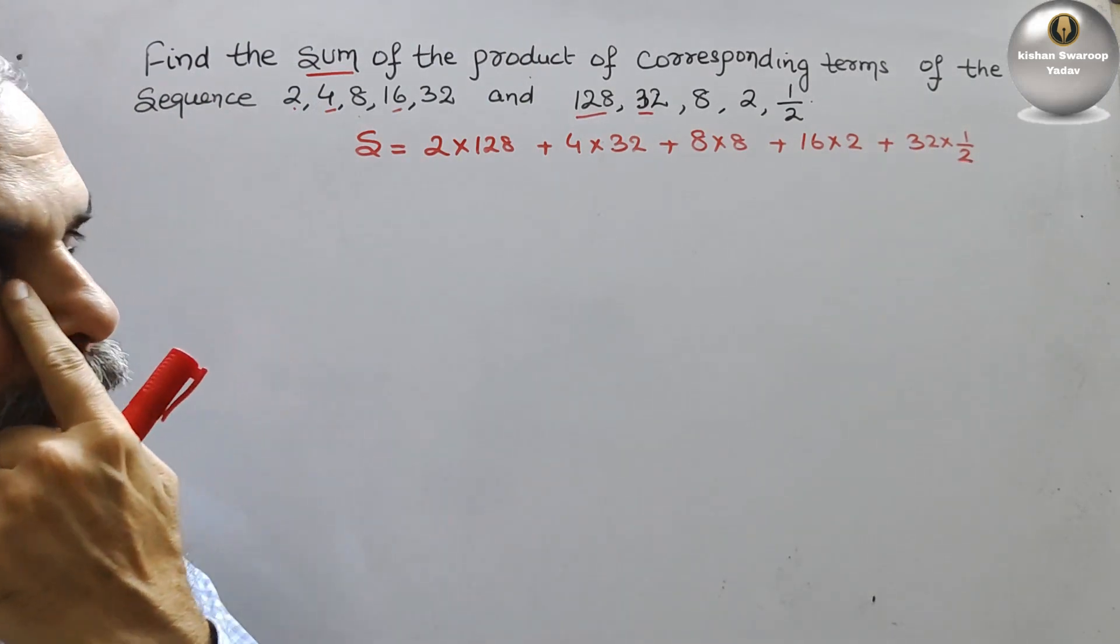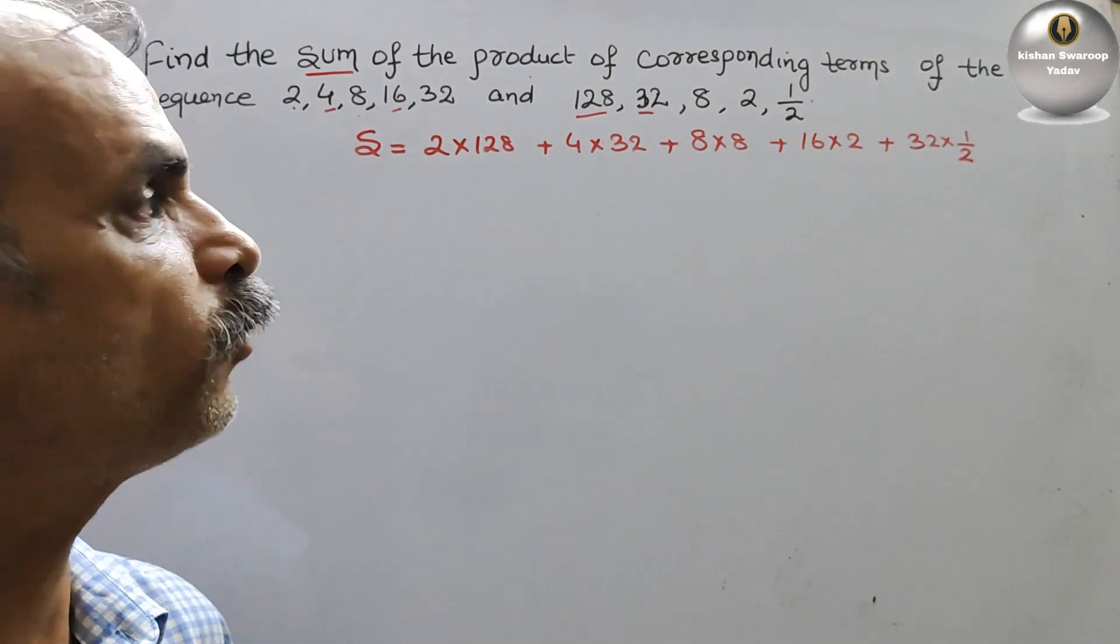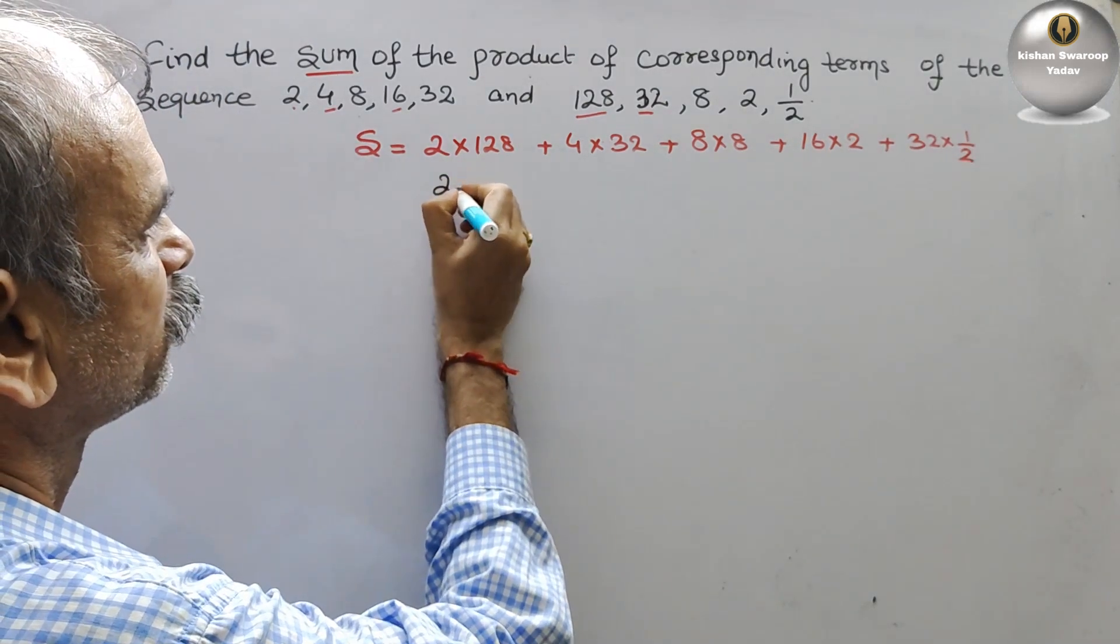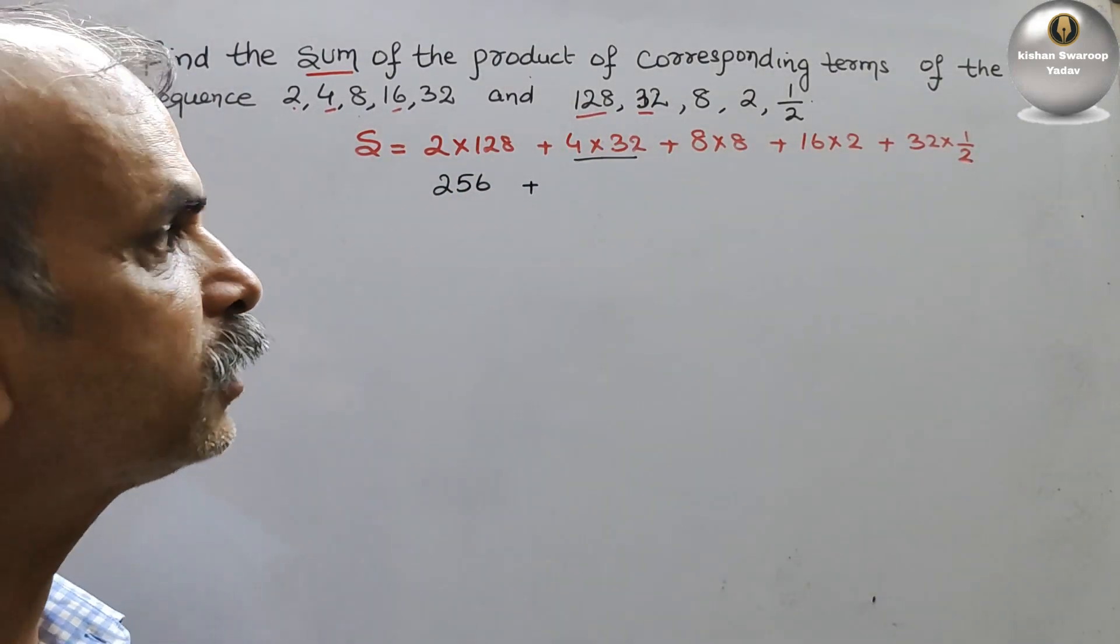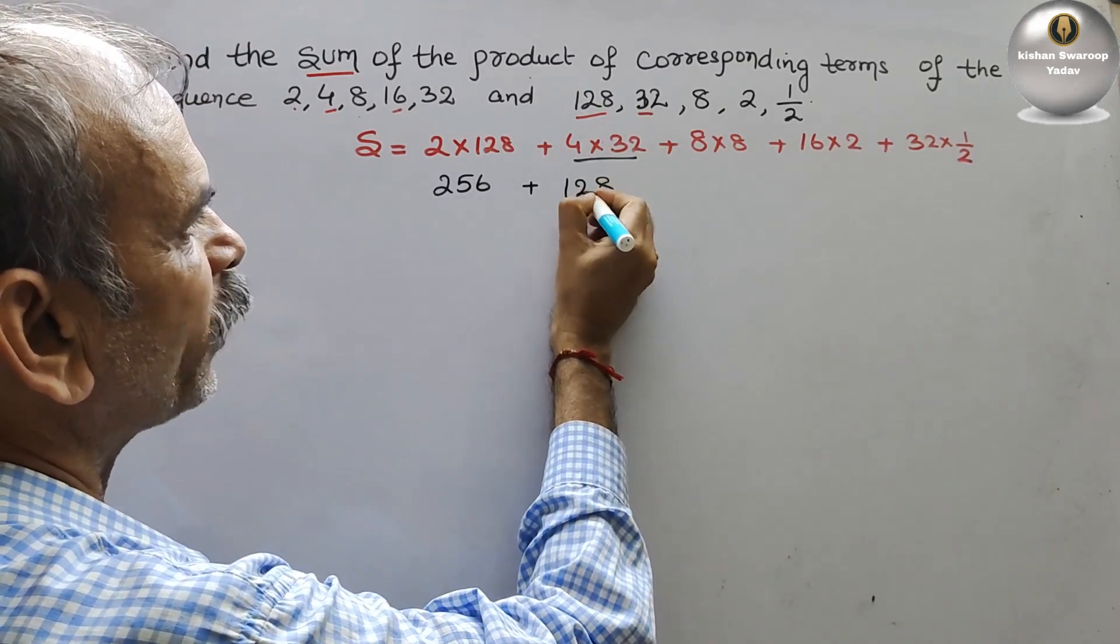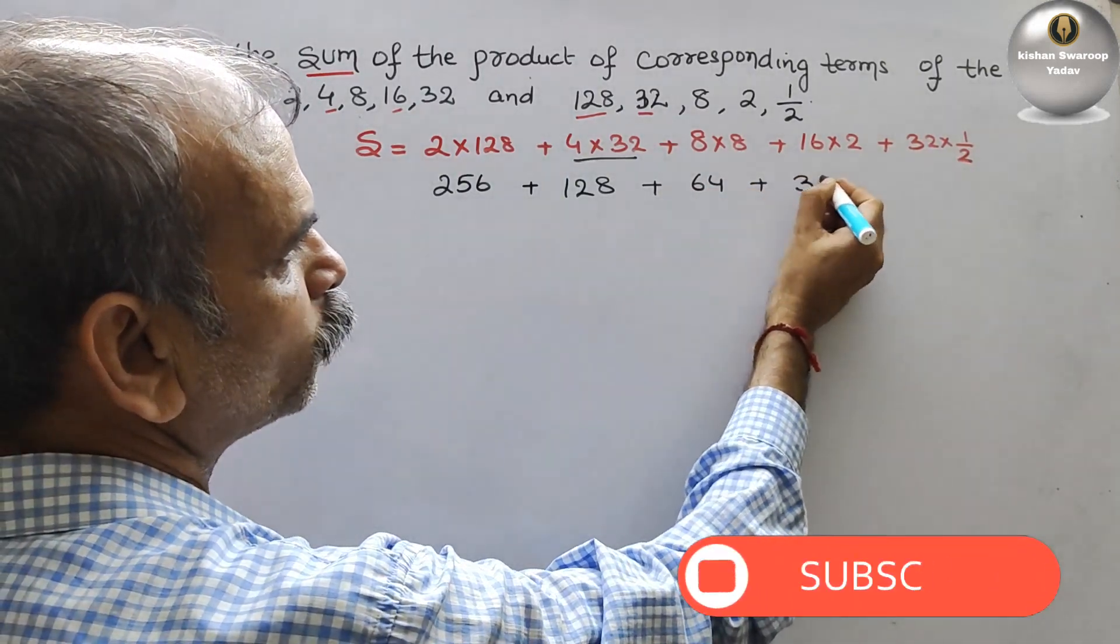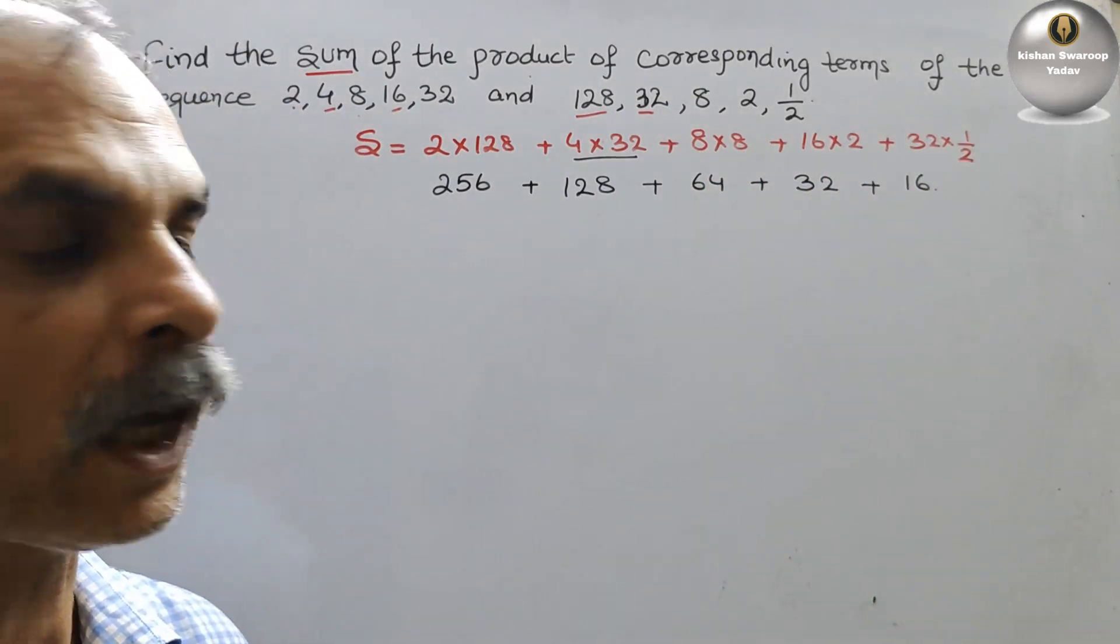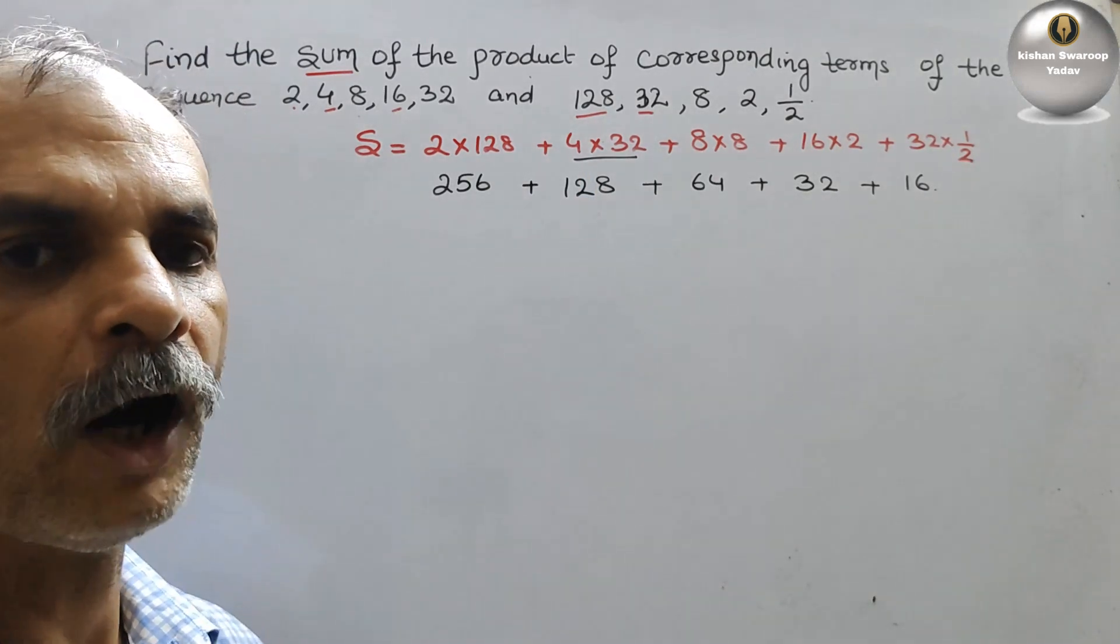Now if you see here, 2×128 is 256, 4×32 is 128, then 64, then 32, then 16. So we have 256 + 128 + 64 + 32 + 16. Now we have to find the sum of this.